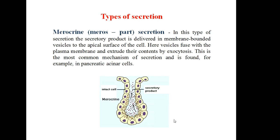Now comes types of secretion. Merocrine secretion — the word meros means part. In this type of secretion, the secretory product is delivered in membrane-bounded vesicles to the apical surface of the cell. Here, vesicles fuse with the plasma membrane and extrude their contents by exocytosis. This is the most common mechanism of secretion and is found, for example, in pancreatic acinar cells.